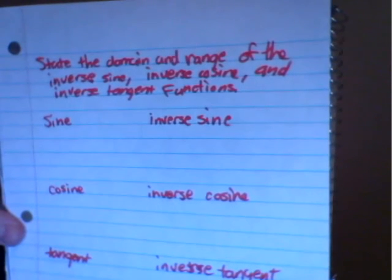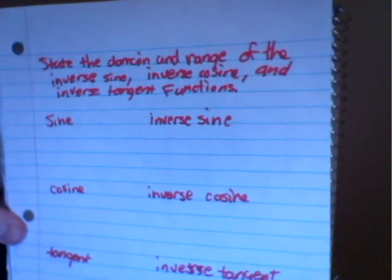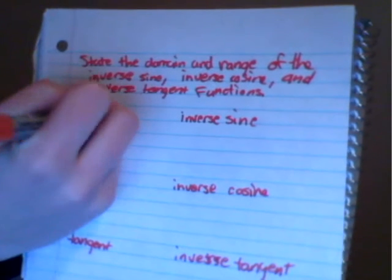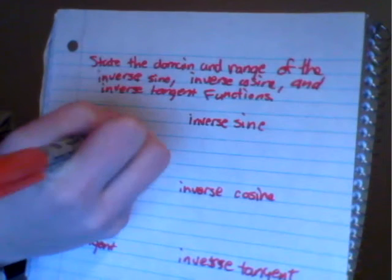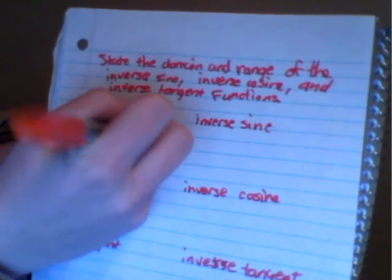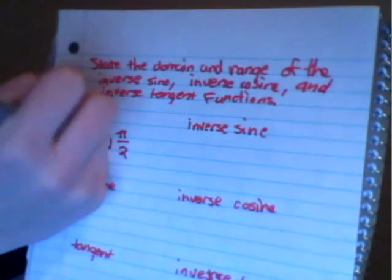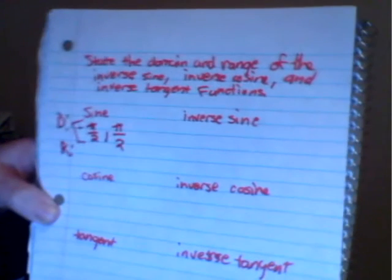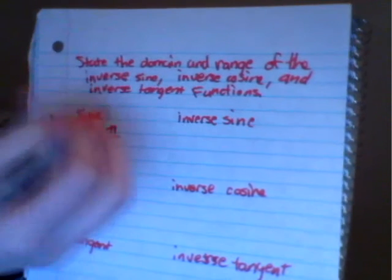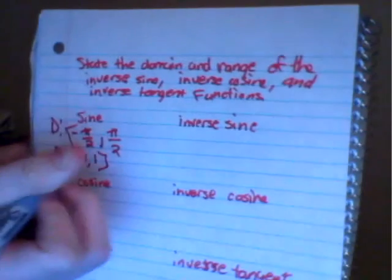Starting off with the sine, it doesn't pass the horizontal line test, so we have to restrict the domain and the range. For the sine, the domain is going to be negative pi over 2 to pi over 2, and the range of the sine function is going to be negative 1 to 1.